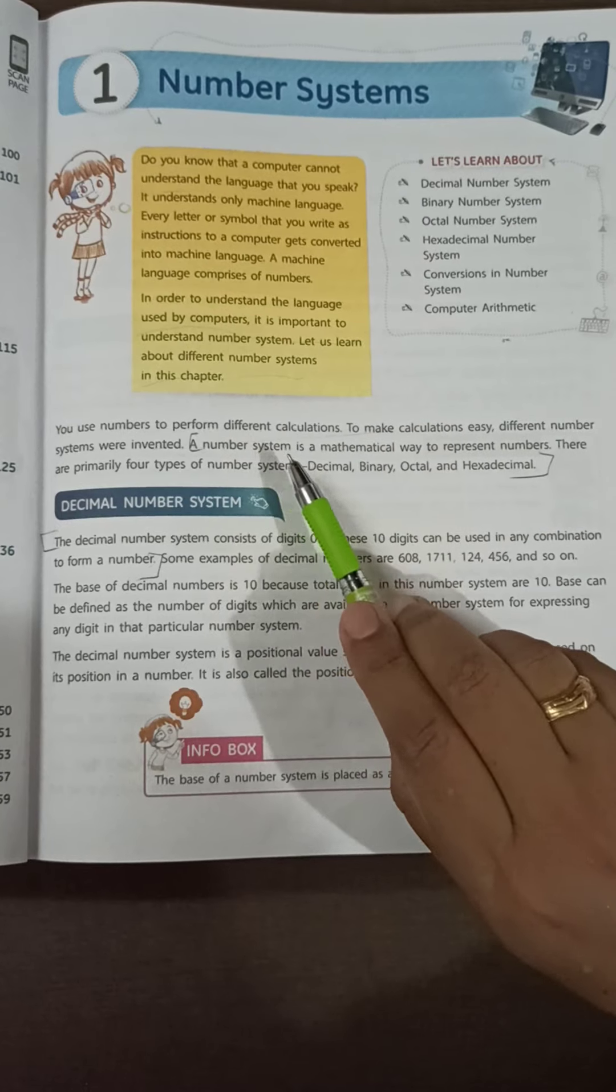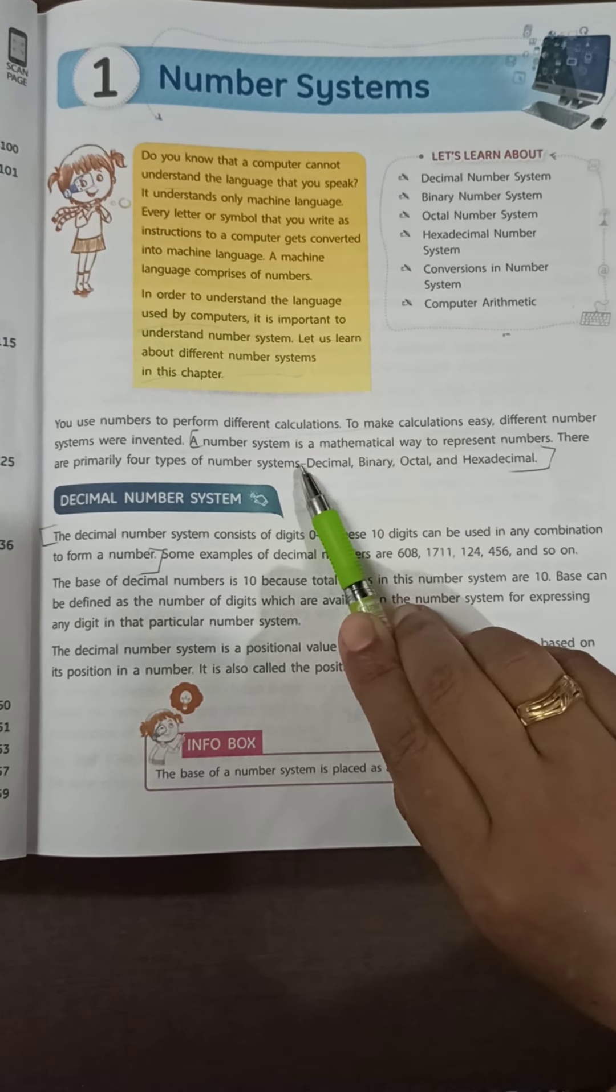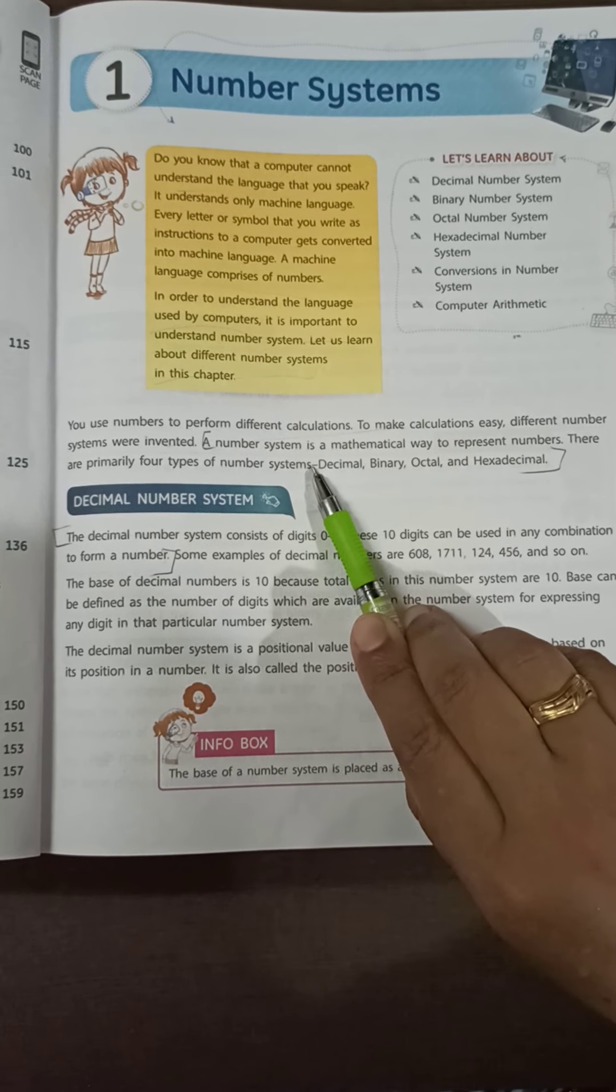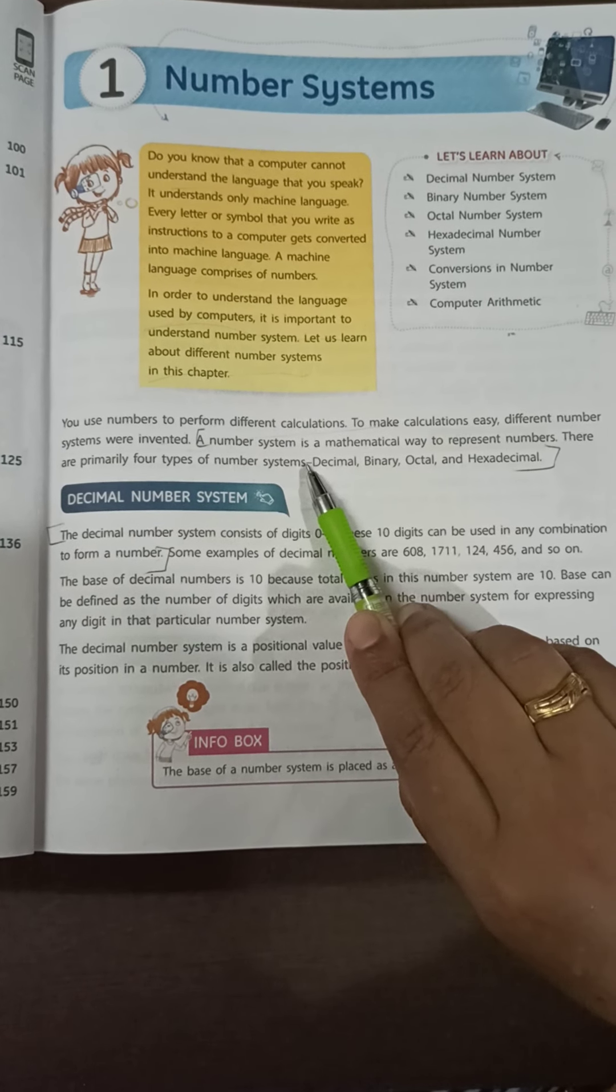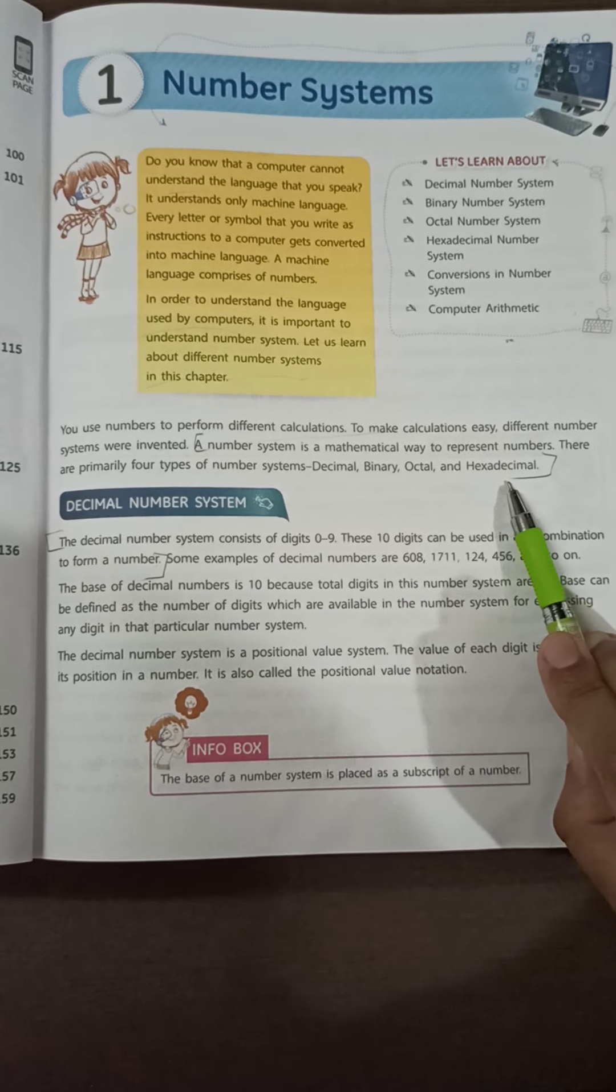A number system is used to represent information in quantitative form. Some important types of number systems are decimal, binary, octal, and hexadecimal number system.